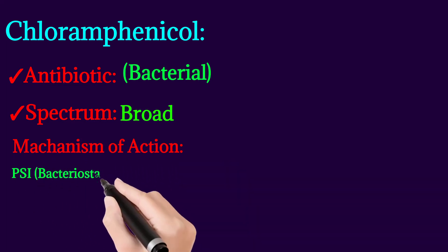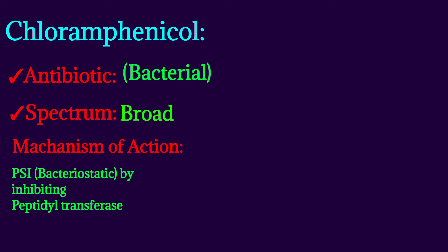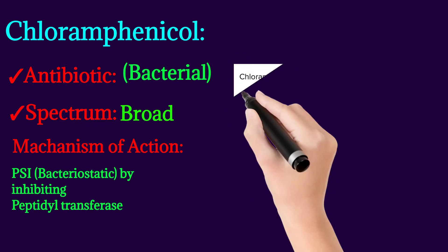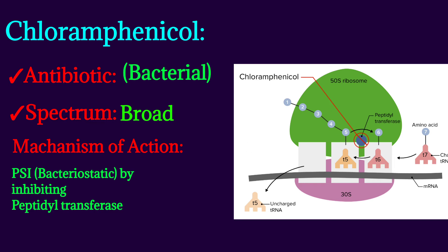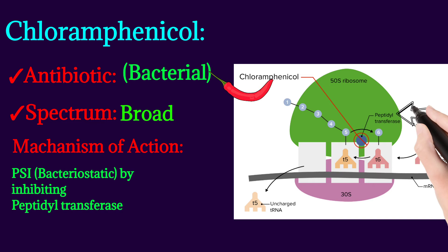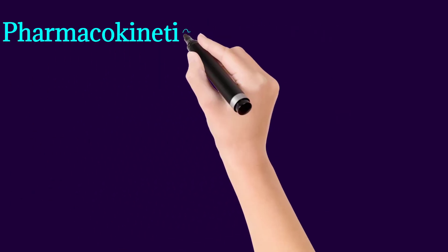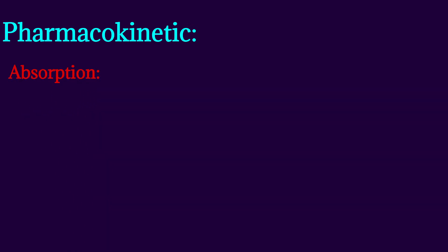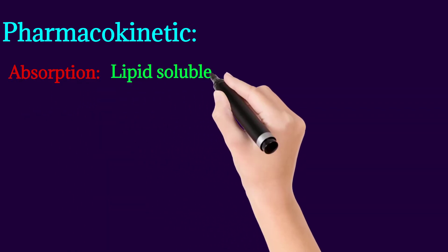The mechanism of action is that it is a protein synthesis inhibitor, by inhibiting peptidyl transferase, which is the enzyme involved in protein synthesis. As you can see in this picture, the main function of peptidyl transferase is to form peptide bonds between adjacent amino acids. This is Chloramphenicol, and this is the peptidyl transferase which is inhibited by it.